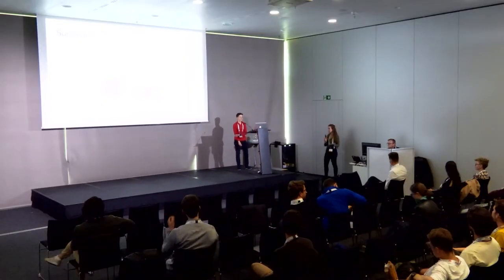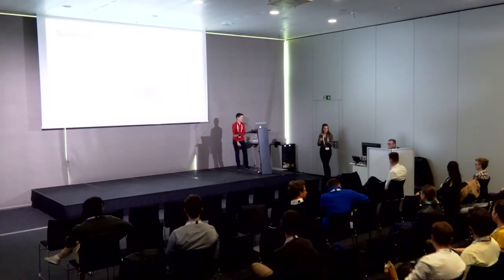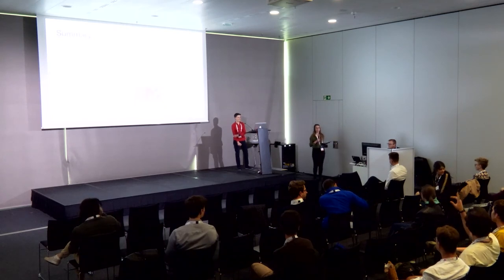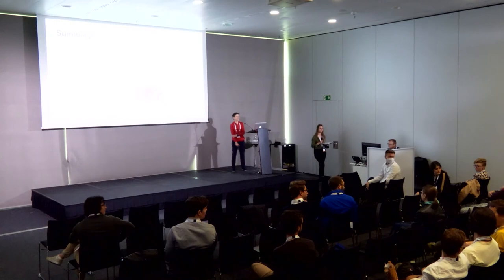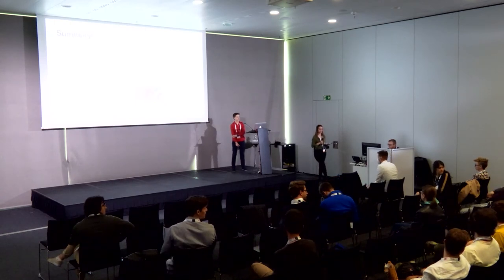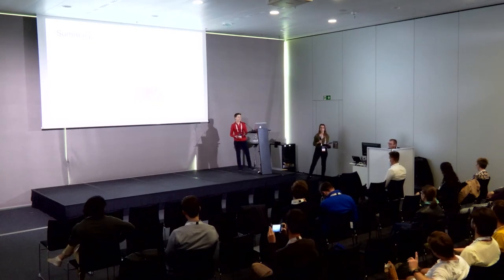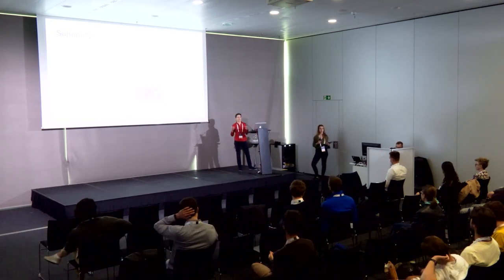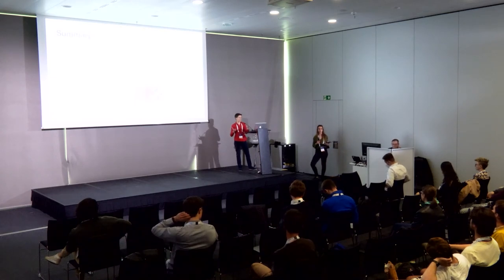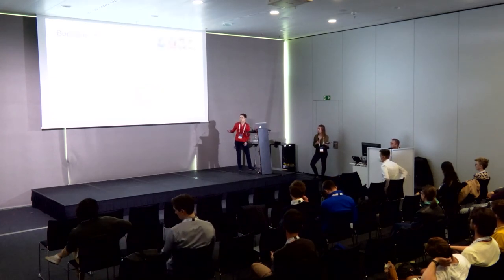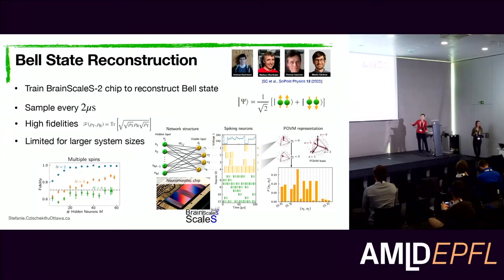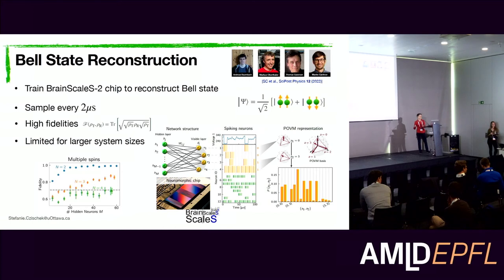Thank you very much for the beautiful talk, and congratulations on the new position. Do you already have an idea of how sampling time scales with the number of qubits? The sampling doesn't scale at all with the number of qubits — you can read out the state at any time, and it doesn't matter whether you're using 20 or 60 hidden neurons, because when you run the chip all neurons run simultaneously. You cannot turn some neurons off, so it doesn't really scale with network size.